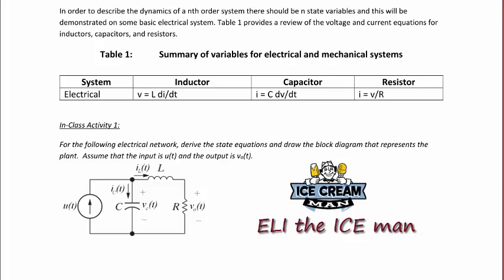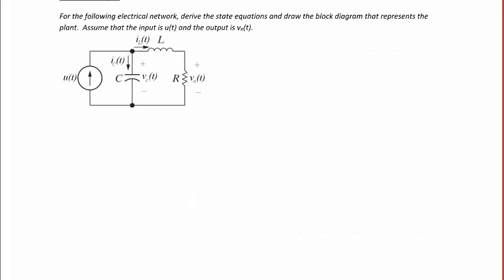All right, let's look at an example. For the following electrical network, derive the state equations and draw the block diagram that represents the plant. Assume that the input is u(t), and the output is v_naught(t). Because this circuit has an inductor and a capacitor, which are two energy storage circuit elements, this is a second order circuit, and it will be represented by a second order differential equation.